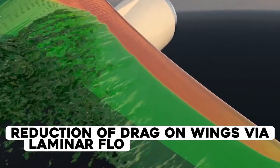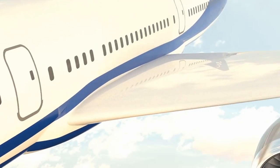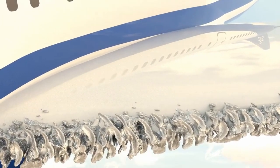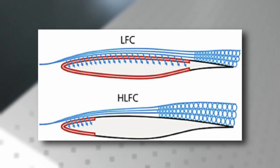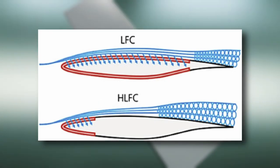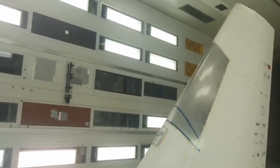Reduction of drag on wings via laminar flow control. The history of laminar flow control dates back to the 1930s and is well documented by Chambers and Braslow. LFC, also referred to as artificial laminar flow, is an attempt to maintain the laminar boundary layer over a large part of the wing by effectively sucking the turbulent boundary layer through tiny perforations in the wing skin. A variation called hybrid LFC, or HLFC, uses natural laminar flow for a larger portion of the wing to reduce the power required to eliminate the turbulent boundary layer growth.